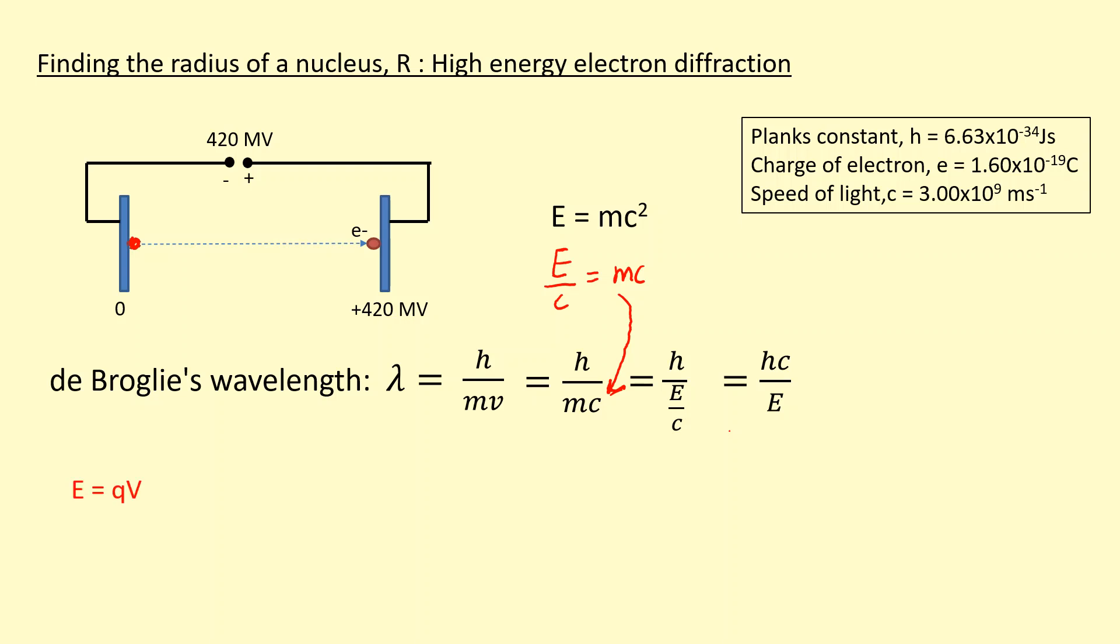So if I multiply the potential difference by the charge, I get the energy. The energy here, if I work it out, is the charge of the electron times the potential difference. So we've got 420 mega electron volts, times 10 to the 6 to turn it into volts, and then multiply by the charge of the electron. I've got the energy.